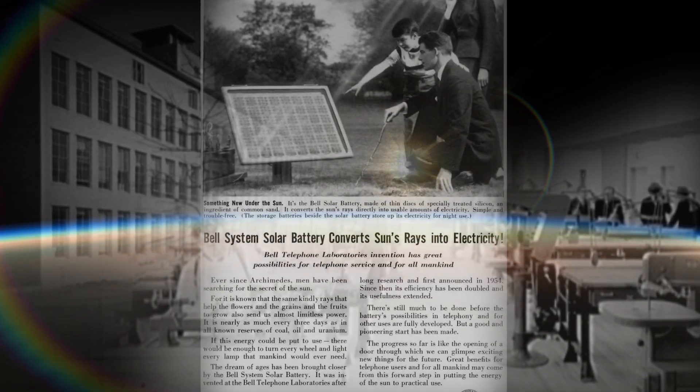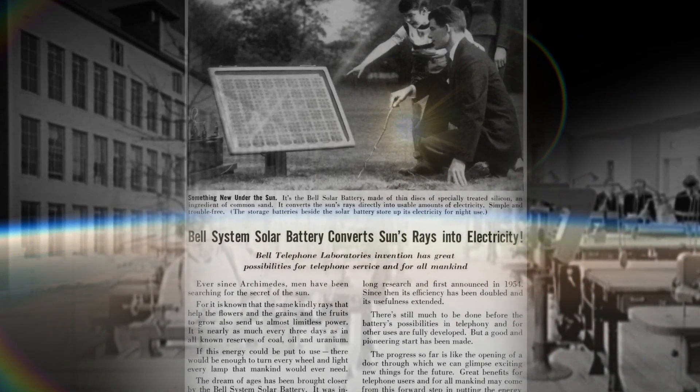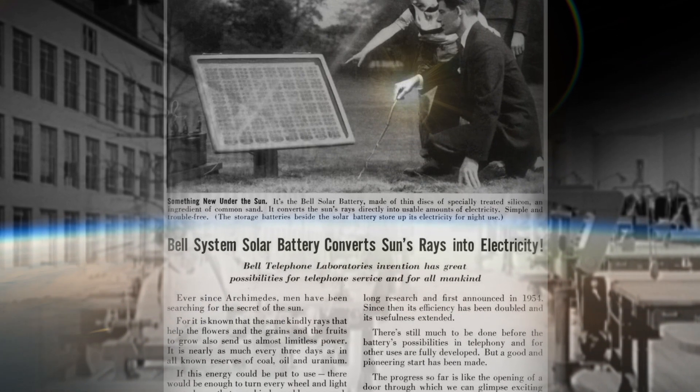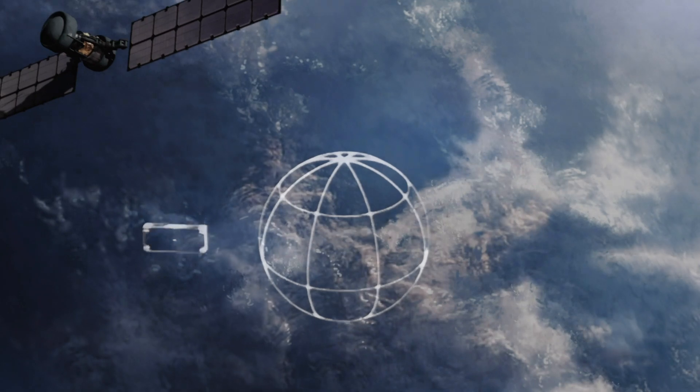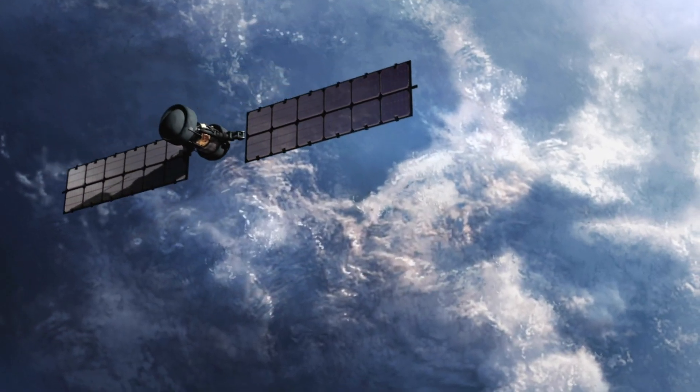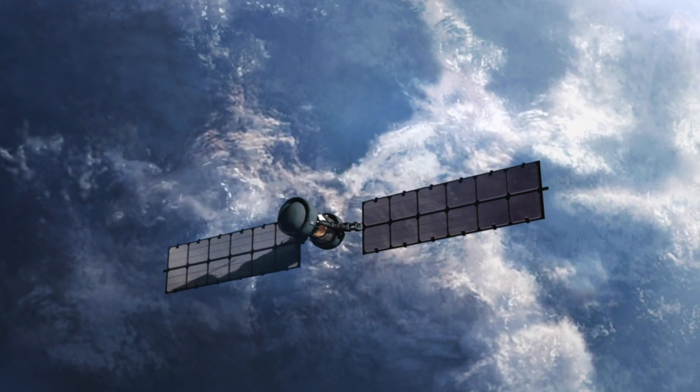The first modern photovoltaic solar cell was made at Bell Laboratories in 1954. In the next decade, solar arrays found their first significant application on spacecraft.